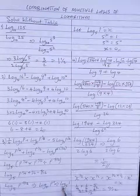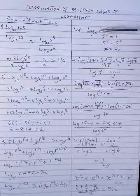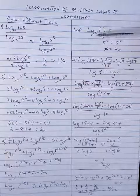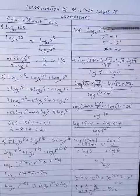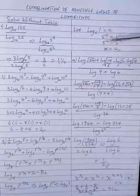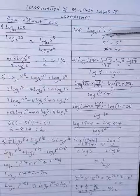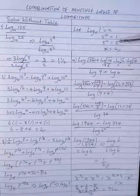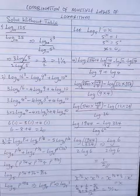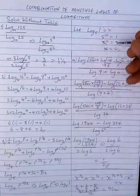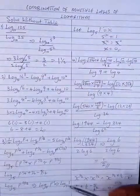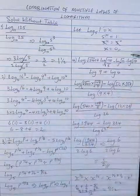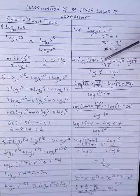To solve it completely without just applying the rule: let logarithm of 1 to base 5 equal s. Then 5 raised to power s equals 1. Since anything raised to power zero equals 1, we write 5 raised to power zero equals 1. Since the bases are the same, we cancel them and equate the powers: s equals zero. This confirms the law that logarithm of 1 to any base is zero. So the answer for question 3 is zero.